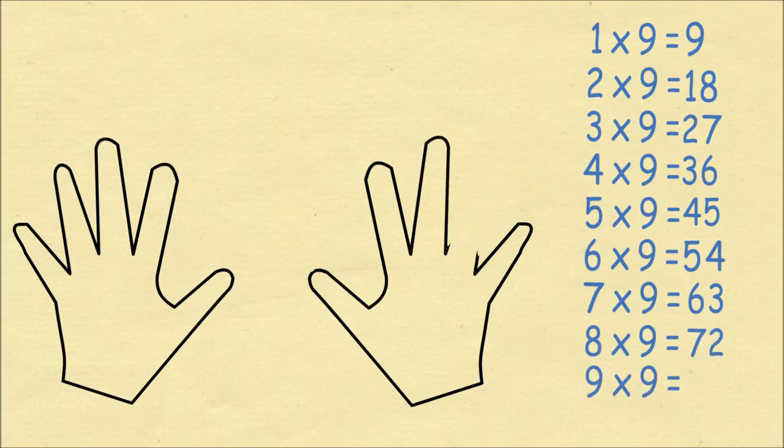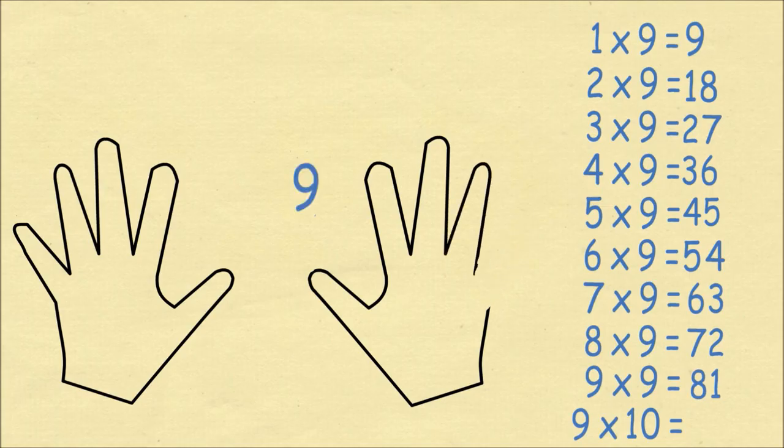Nine times nine is eight one eighty-one. And finally nine times ten we'll have nine fingers to the left and zero fingers to the right to make ninety.